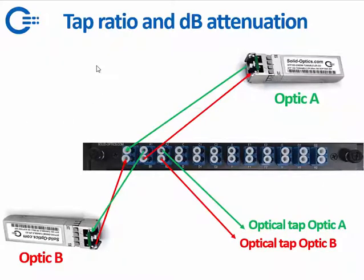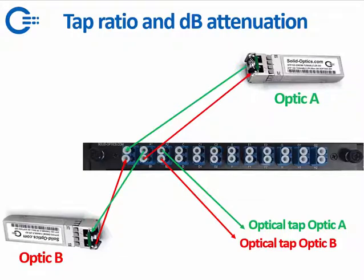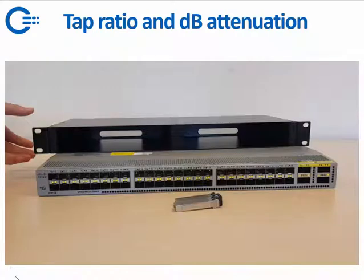How do you patch a splitter? Here is a sample diagram. You get a red optic and a green optic. Optic B is sending out to the 100% port. That 100% port splits: 50% goes to Optic A, and 50% of the light goes to the optical tap for Optic B. Optic A sends out the green line, which goes to the 100% port; 50% is sent to Optic B and the link is up. I made a sample movie on how to patch it, which I want to show, and after that the presentation is done.